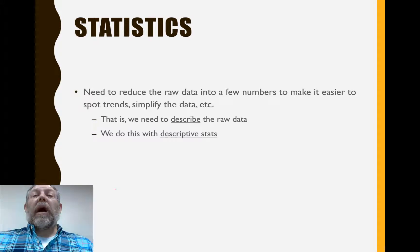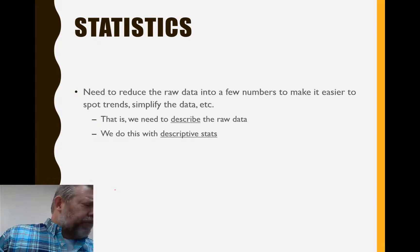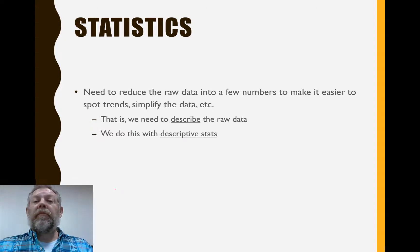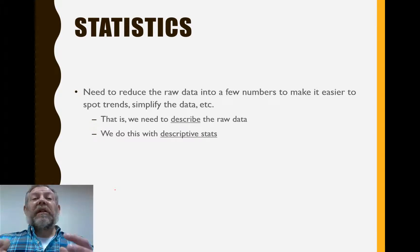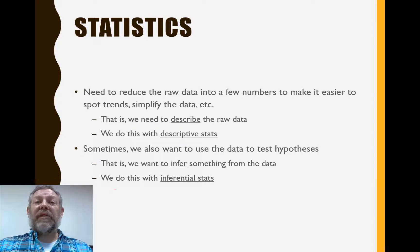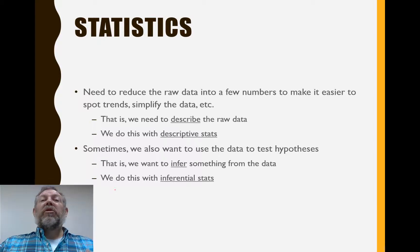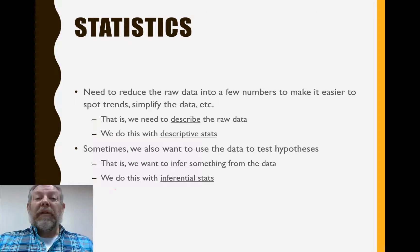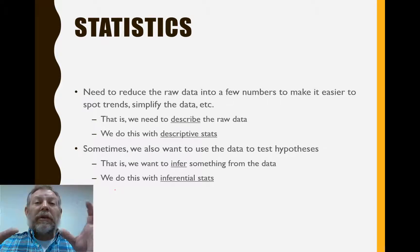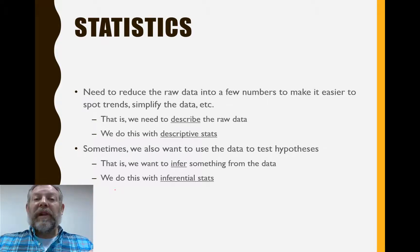That's what we do with something called descriptive stats — descriptive stats describe raw data. When you typically think of stats, a lot of times you're talking about things like baseball stats, like a batting average. Those would be descriptive stats — just a way of taking a lot of observations and reducing them down to something easier to understand. We also have stats that help us test hypotheses. If we have a hypothesis and collect data, we can use that data to infer whether we reject the hypothesis or fail to reject it. Those are called inferential stats. So we have two broad categories: descriptive stats describe, and inferential stats test hypotheses.